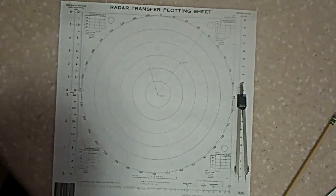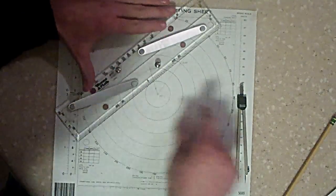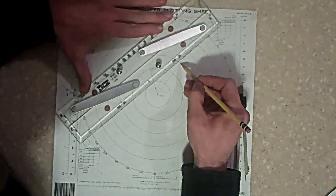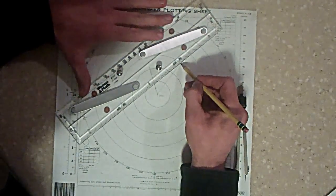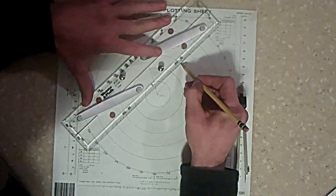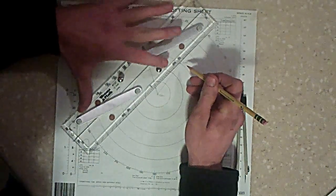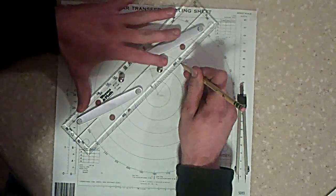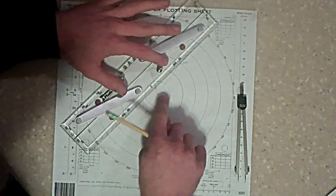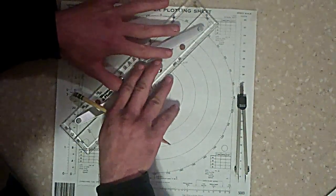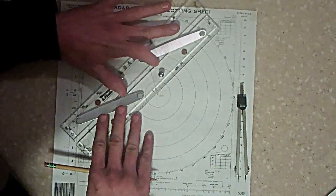Alright, so from your current vector to your 0100 position, line your parallels up, and then walk them over to the center to find the course to steer.